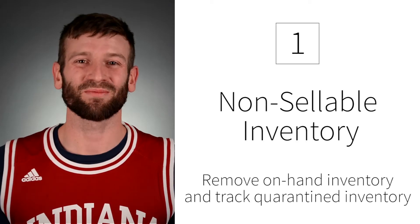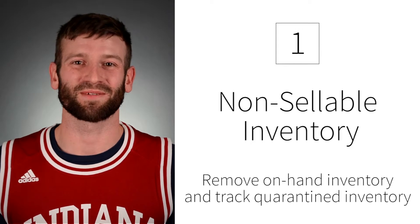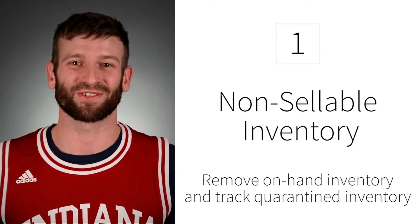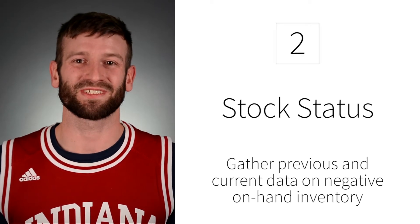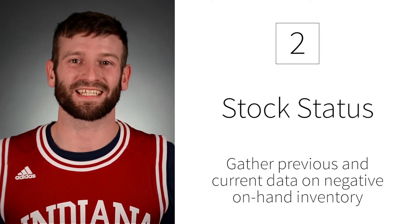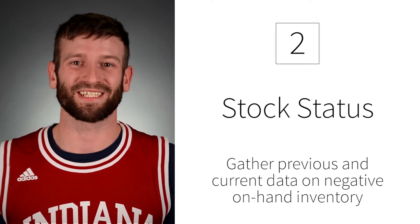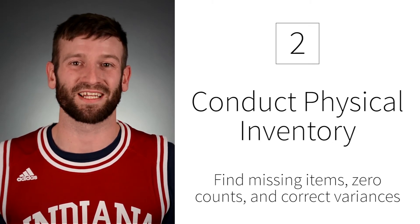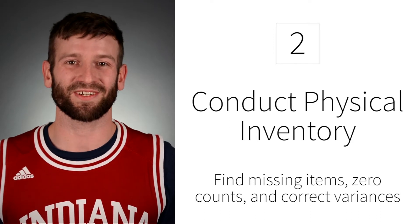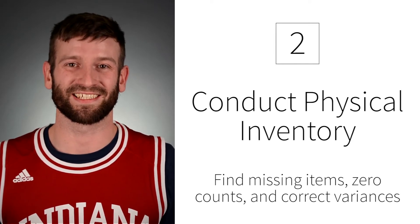You can do this using several of our functions and reports. Non-sellable inventory provides stores the ability to remove on-hand inventory and track quarantine inventory. Stock status allows you to gather previous and current data on negative on-hand inventory, and conducting physical inventories helps you find missing items, zero counts, and correct your variances.